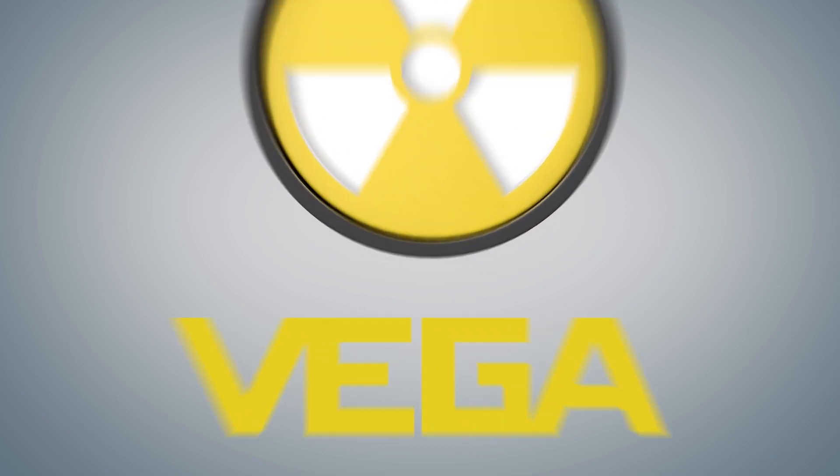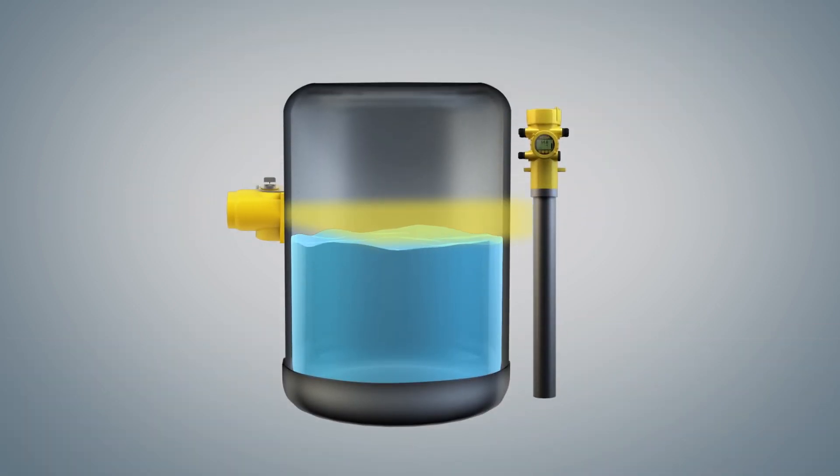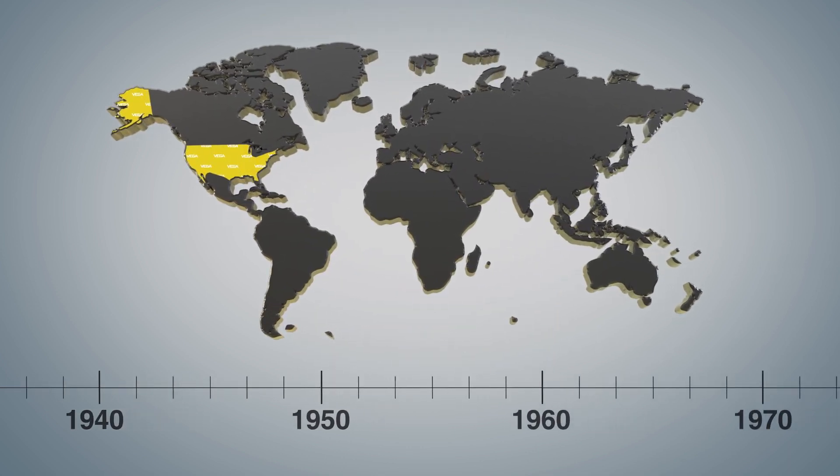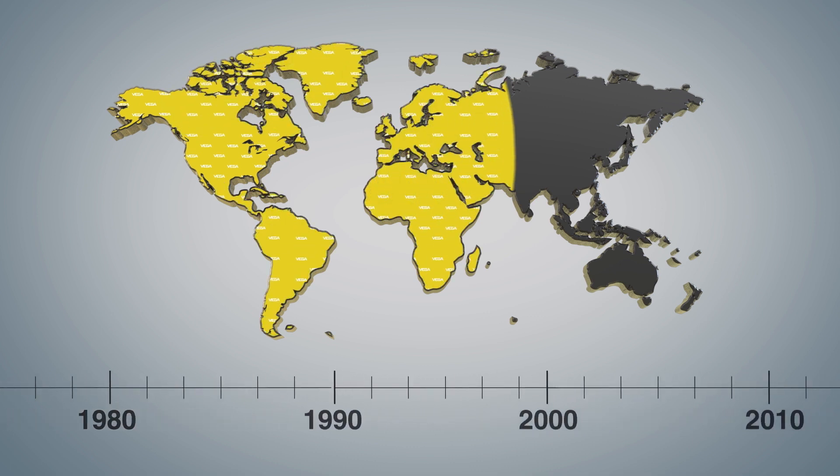Vega was one of the first companies to use radiation to make process measurements, going all the way back to the 1950s. We were the world leader in radiation-based measurements then, and we still are today.